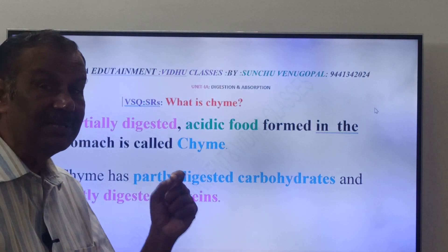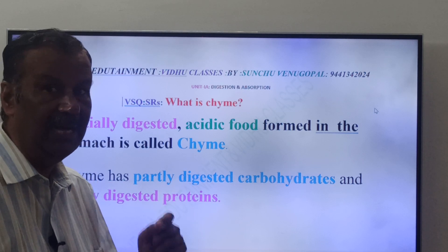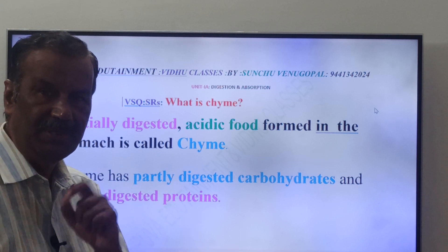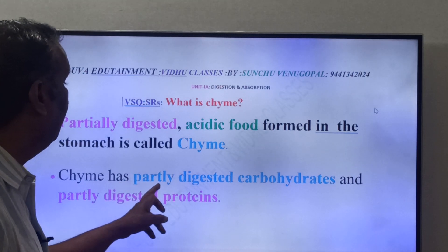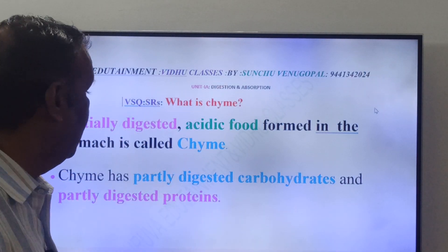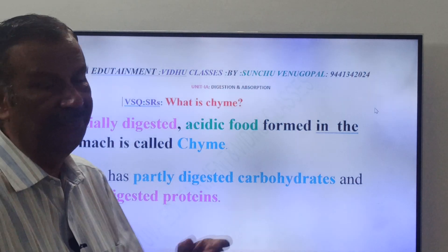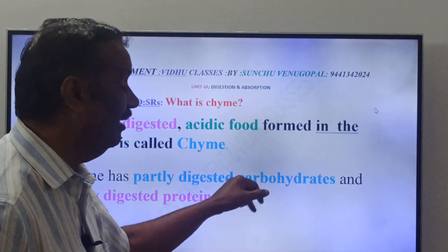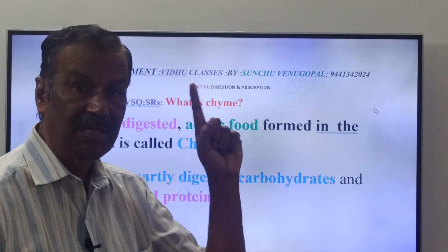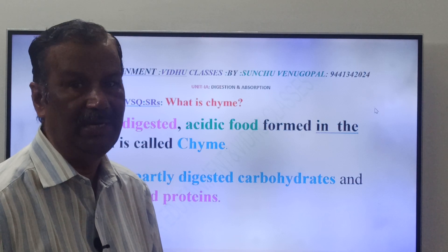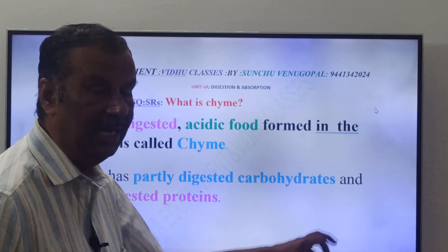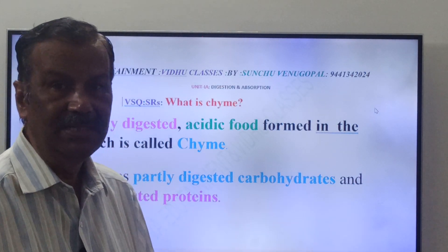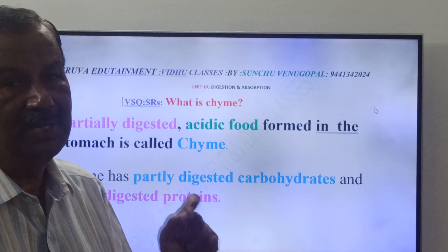Friends, what are the components of Chyme? Chyme has water, HCl, and some other components. The important components are: Chyme has partially digested carbohydrates and partially digested proteins. You know, friends, the stomach has no amylases. But saliva has salivary amylase, which digests the carbohydrates — that is, partially digested carbohydrates. And gastric juice has pepsinogen, which digests the proteins. So, Chyme has partially digested carbohydrates and partially digested proteins.